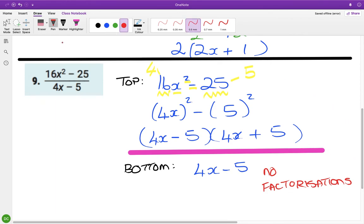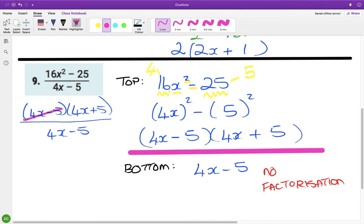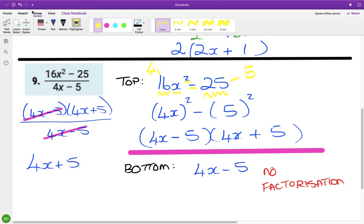Okay, so no factorization on that one which means we just leave it be. So top line is 4x minus 5, 4x plus 5 over 4x minus 5. So 4x minus 5 cancels with the 4x minus 5 and we are left with 4x plus 5 as our final answer.